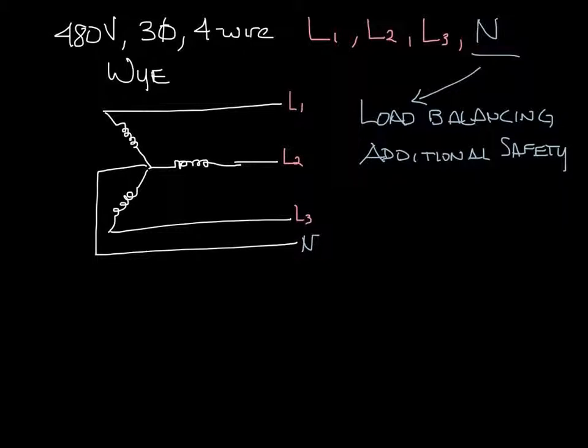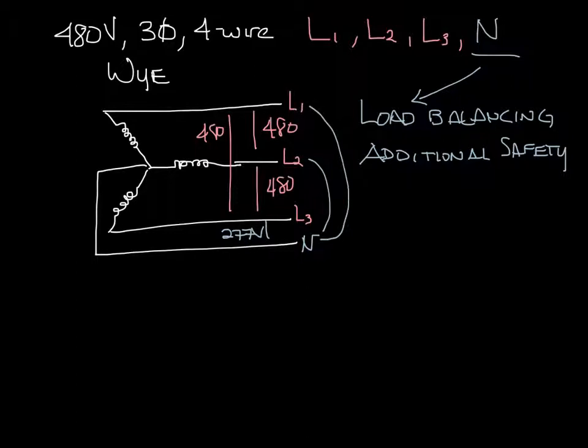With the 4-wire Y, you can get 480 volts line to line. So between L1 and L2, 480 volts. L2, L3, 480 volts. But you can also get 277 volts between any line and neutral. So L1 to neutral, L2 or L3 to neutral is 277 volts. The lower voltage is always the higher voltage divided by the square root of 3.